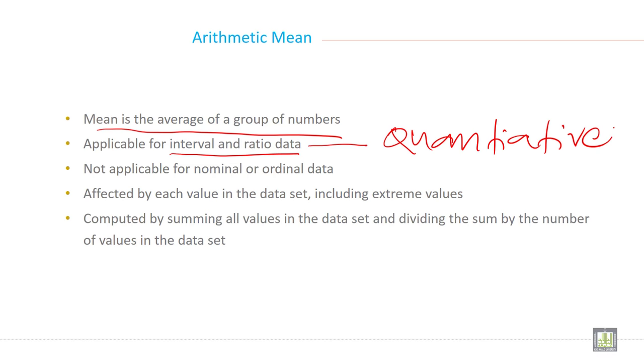Not applicable for nominal and ordinal. Nominal and ordinal means qualitative data or categorical data. It is not applicable for qualitative or categorical data.